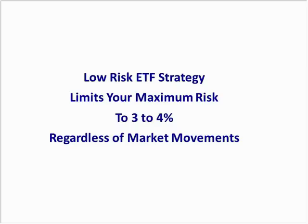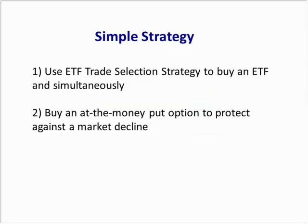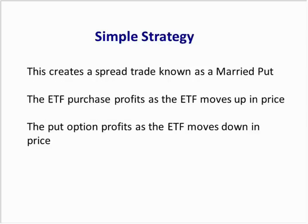This strategy limits your maximum risk on these trades to 3% to 4%, regardless of market movements. It's very simple: the first step is we use our ETF trade selection to buy an ETF, and then simultaneously buy an at-the-money put option to protect against a market decline. You buy the ETF and at the same time buy an at-the-money put option to protect your ETF if the market declines. This creates a spread trade known as a married put trade.